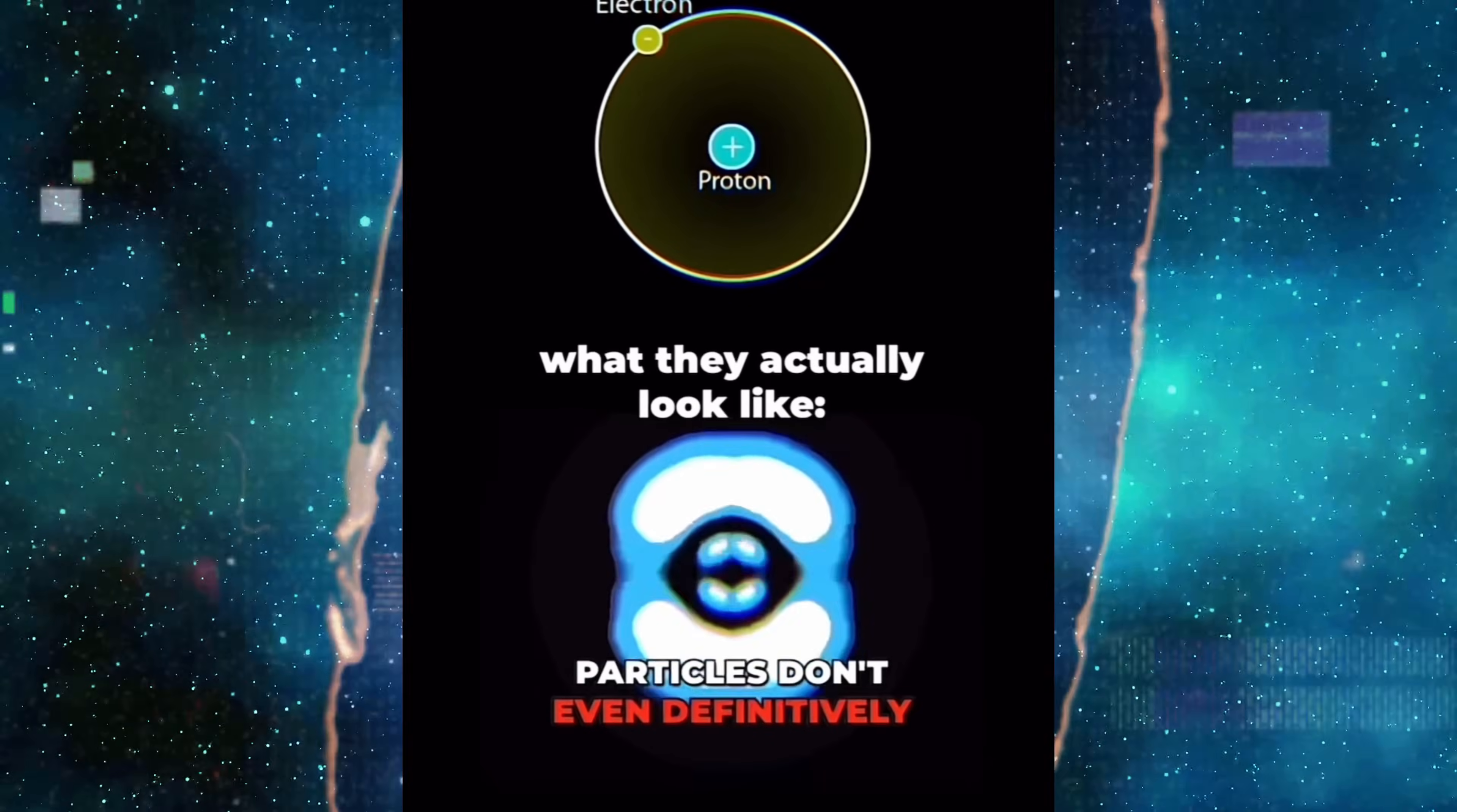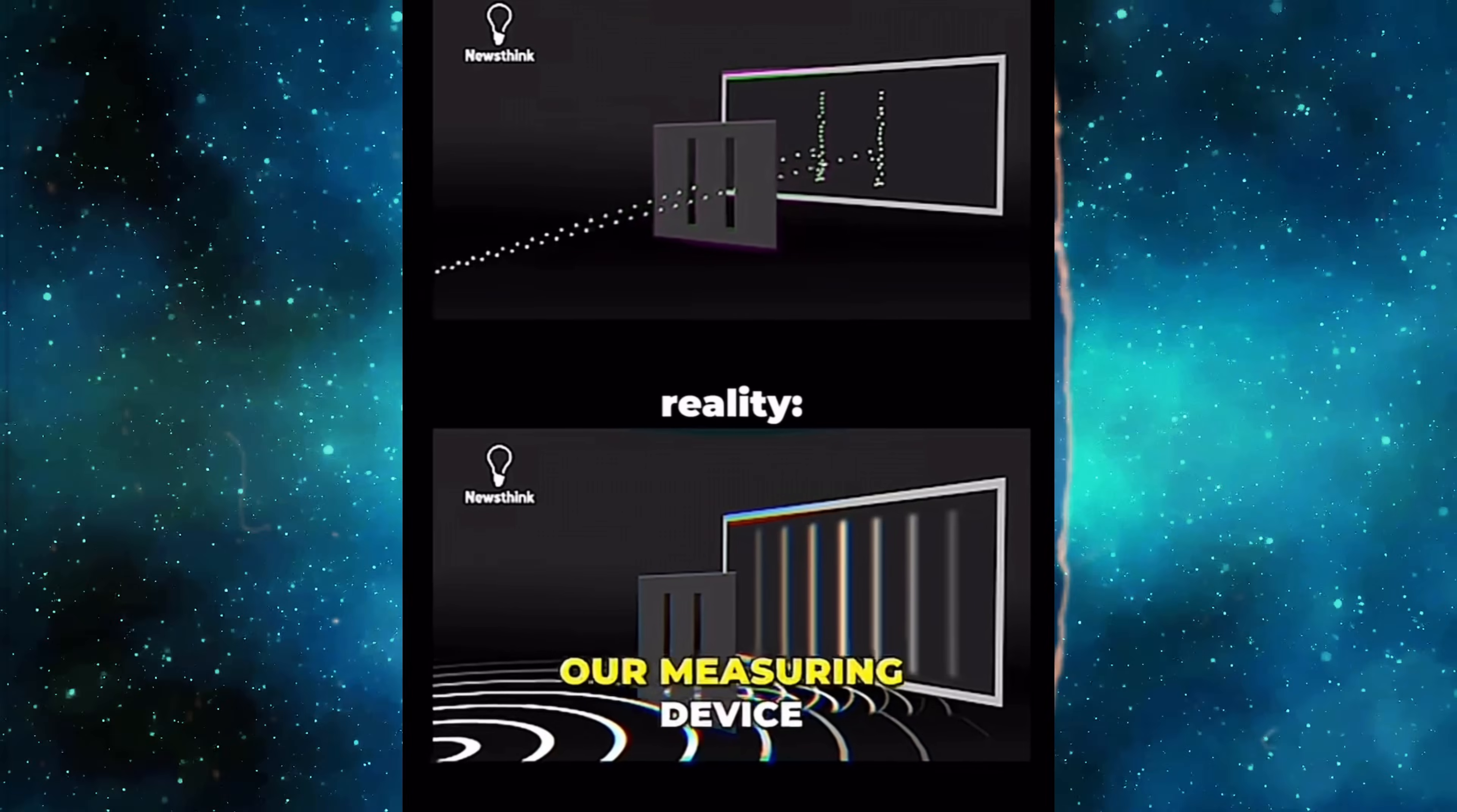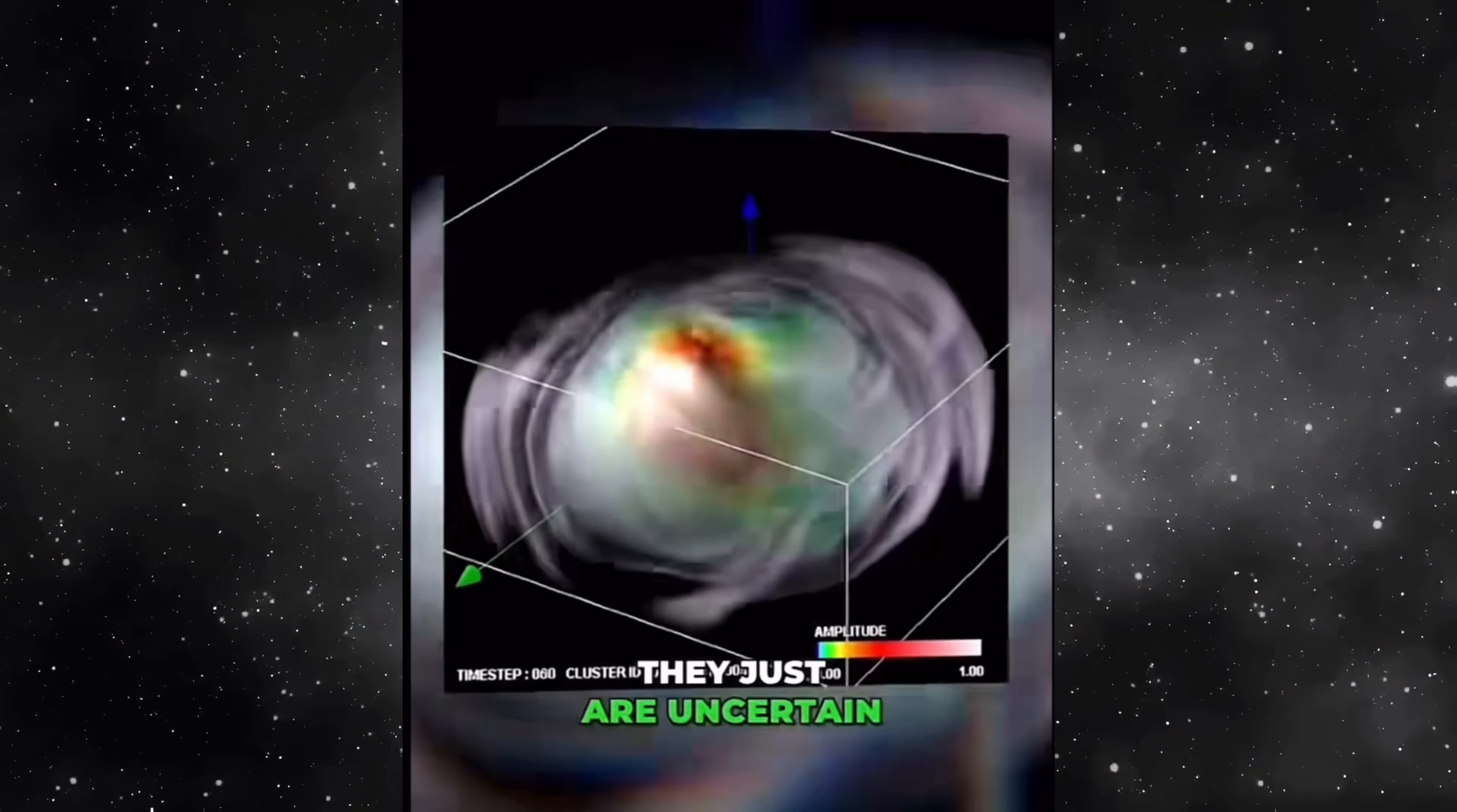At this scale, particles don't even definitively exist in space and time. The position and velocity is inherently uncertain, and that's not a problem with our measuring devices. It is built into the very nature of quantum particles. They just are uncertain.